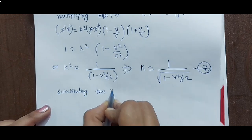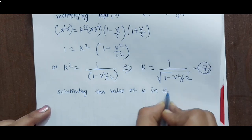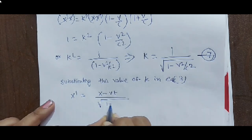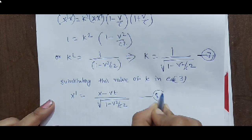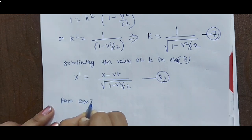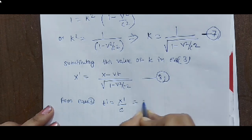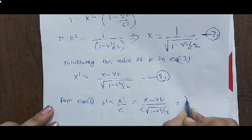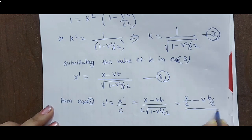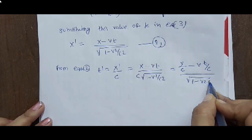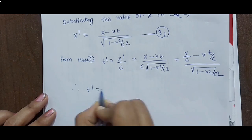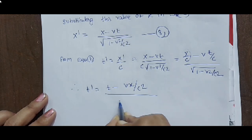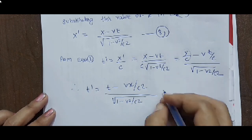Substituting this value of k in equation 3, we obtain x' = (x - vt) / √(1 - v²/c²). This is equation 8. From equation 2, t' = x'/c = (x - vt) / (c·√(1 - v²/c²)) = (x/c - vt/c) / √(1 - v²/c²). Therefore t' = (t - vx/c²) / √(1 - v²/c²). This is equation 9.